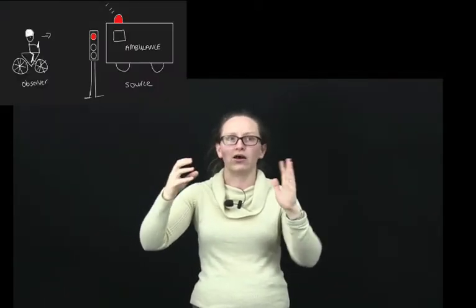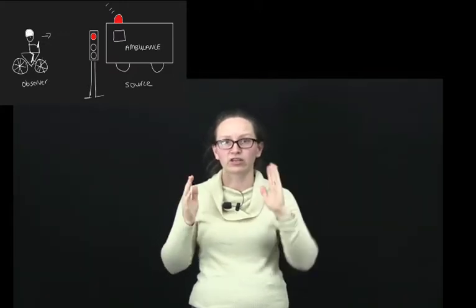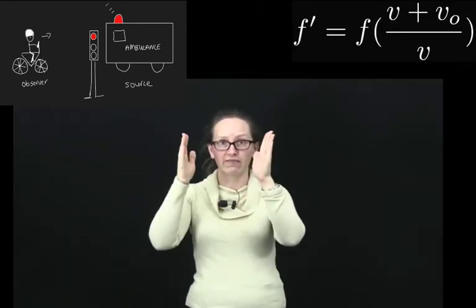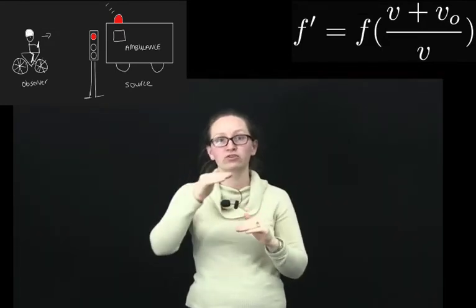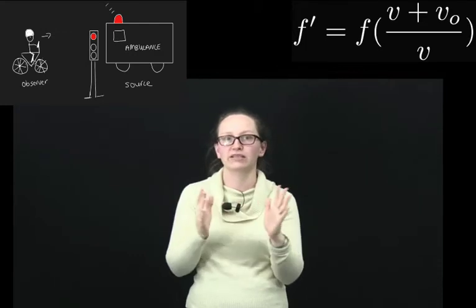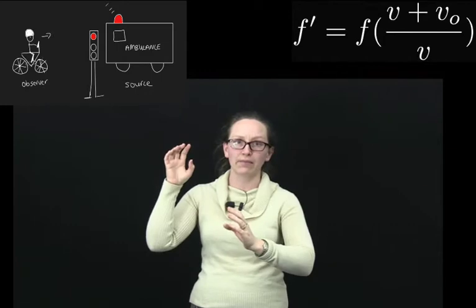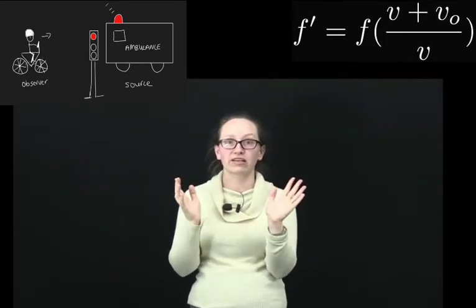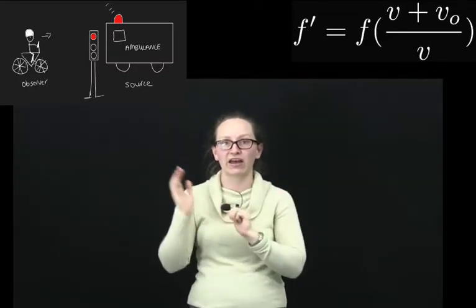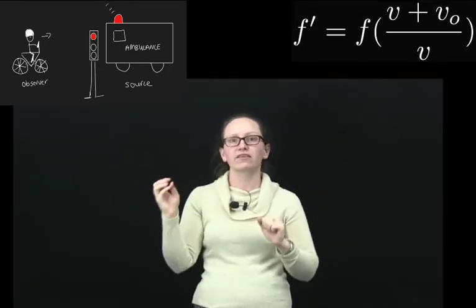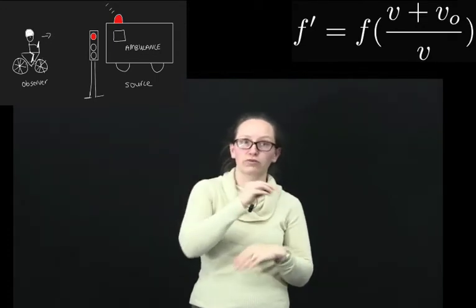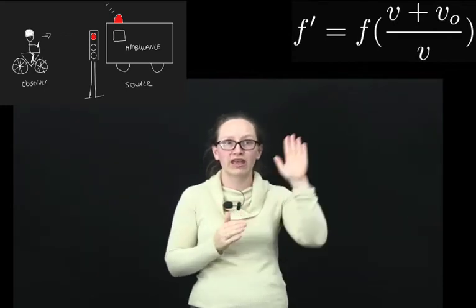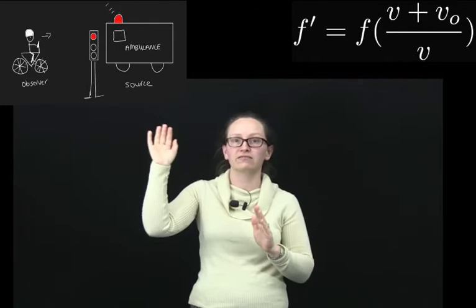If we have an observer moving towards a source, the frequency observed, f dash, equals the frequency produced by the source f, multiplied by the velocity of waves in the medium — for sound waves in air, 343 metres per second — plus the velocity of the observer v_o, all divided by v. So the equation is: f dash = f × (v + v_o) / v. For a speed camera using electromagnetic waves, v = 3.00 × 10⁸ m/s.